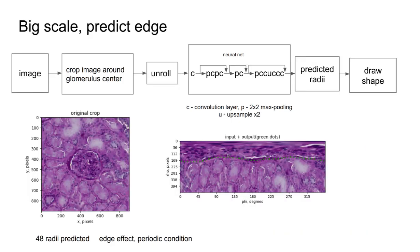The next stage is on the big scale. We have a cropped image around the center, and it makes an unrolled image. Here is the unrolled image, and the green dots are the predicted radii.